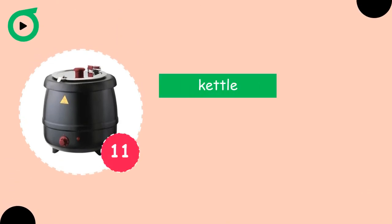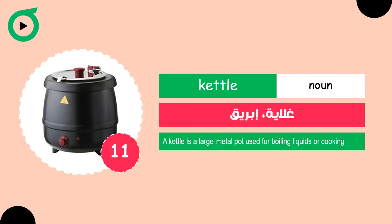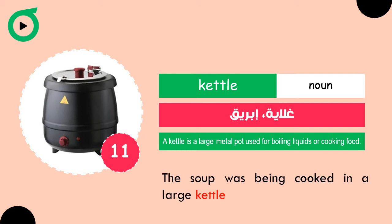Kettle. A kettle is a large metal pot used for boiling liquids or cooking food. The soup was being cooked in a large kettle.